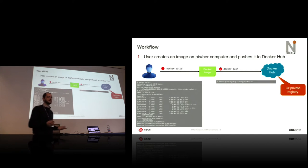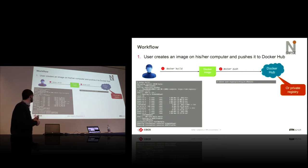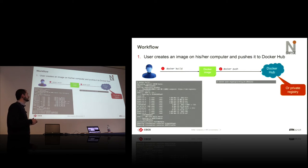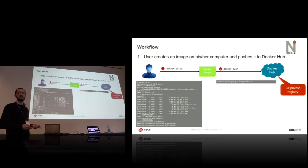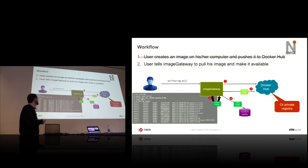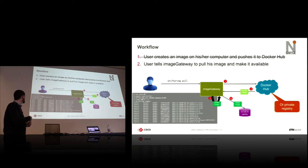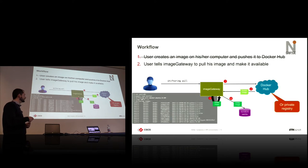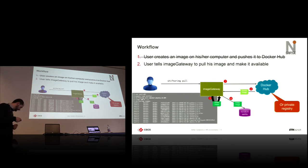A typical user workflow: the user builds an image on their local laptop, then pushes it to Docker Hub or a registry. Then they log into the system — in this case called Santis — load the shifter module, and pull the image. What the image gateway does is contact Docker Hub, get all the layers of the Docker image, compress them, stack them, squash them into one file, and put it on a shared file system that your compute nodes can access.